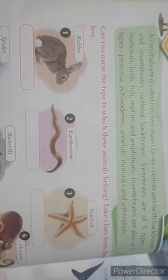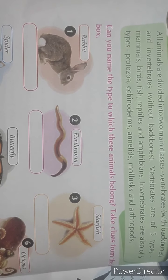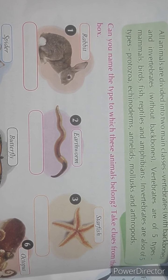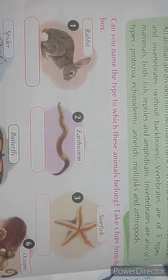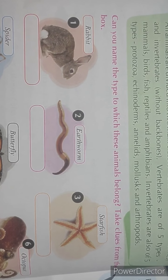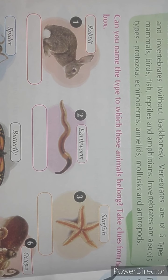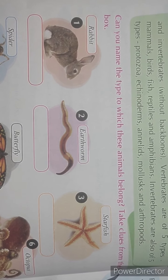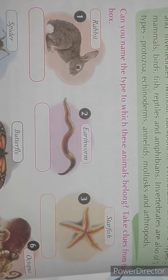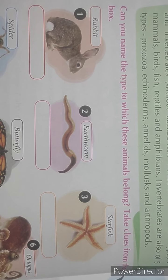Now, vertebrates are of five types: mammals, birds, fish, reptiles, and amphibians.